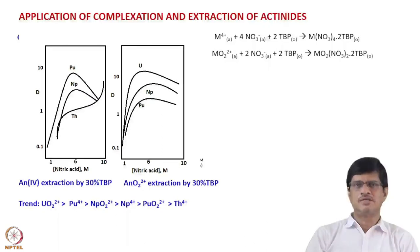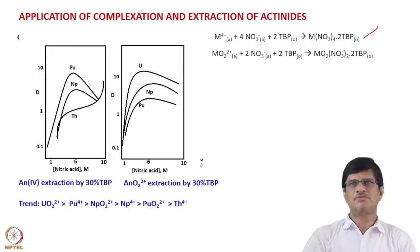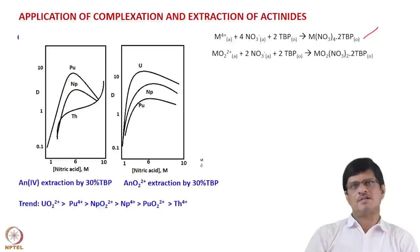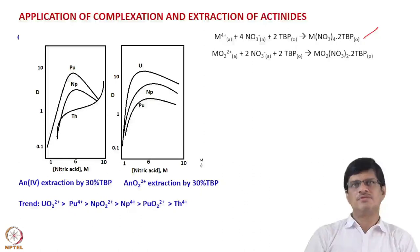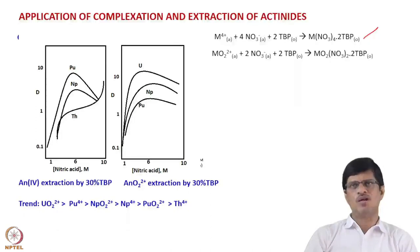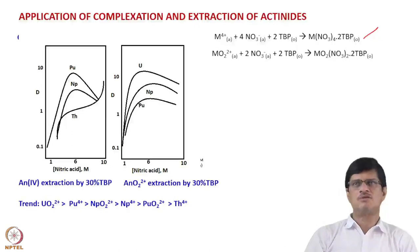The extraction equilibrium for tetravalent actinides is given here. The tetravalent metal ion in the aqueous phase forms a complex with 4 nitrates in the aqueous phase and 2 TBP molecules present in the organic phase, resulting in a complex of the type M(NO3)4·2TBP, which is favorably partitioned into the organic phase.